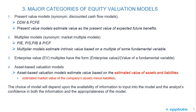The second major category of equity valuation models is the multiplier models, synonym market multiple models. Some examples are price-to-earnings, price-to-sales, price-to-book, and price-to-cash flow. Multiplier models estimate intrinsic value based on a multiple of some fundamental variable. The third major category is enterprise value (EV) multiples, which have the form of enterprise value divided by the value of a fundamental variable.